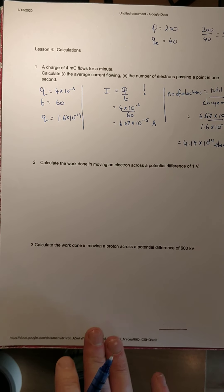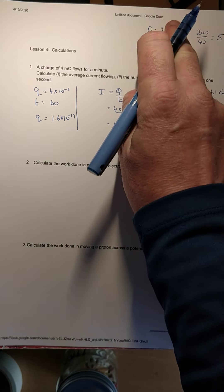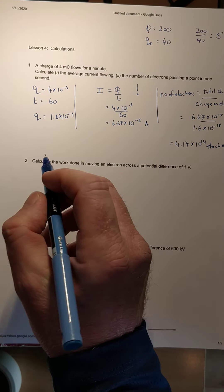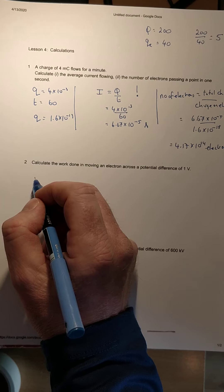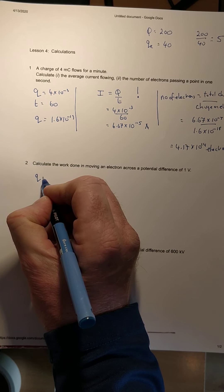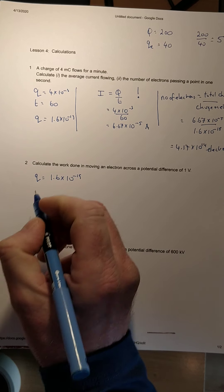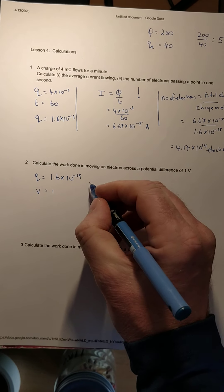Second one: calculate the work done moving an electron across a potential difference of one volt. This is the definition of the electron volt. So it's an electron, so again we're interested in the charge, which is 1.6 × 10⁻¹⁹, and the voltage is 1.